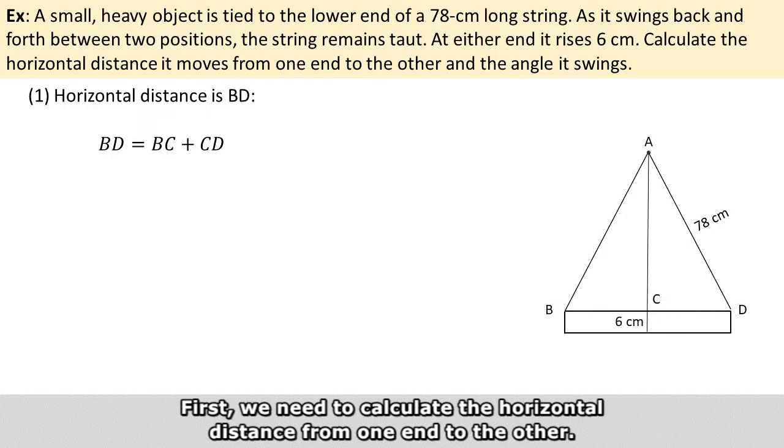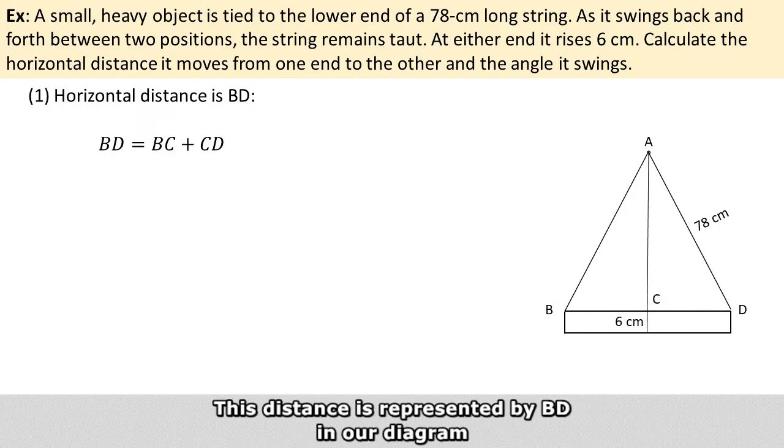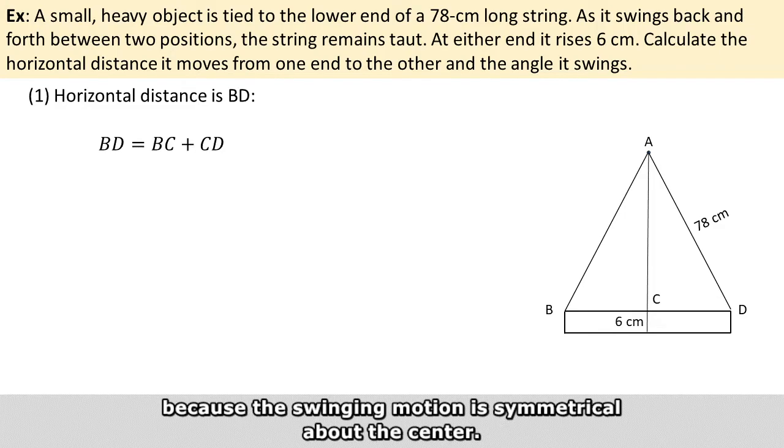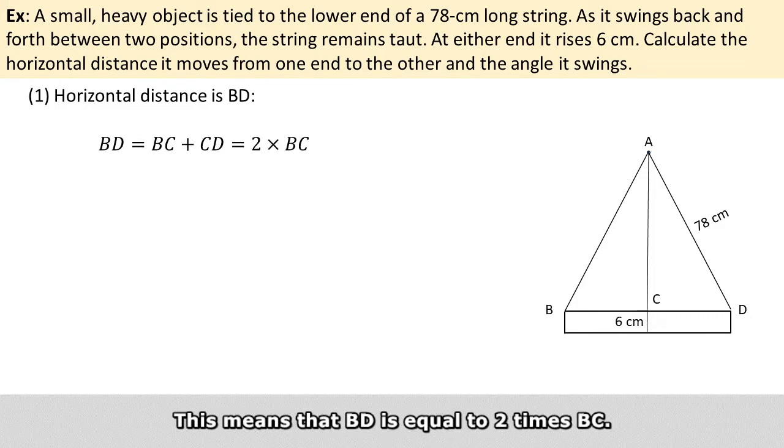First, we need to calculate the horizontal distance from one end to the other. This distance is represented by BD in our diagram, which also equals BC plus CD. Because the swing motion is symmetrical about the center, this also means that BD equals 2 times BC.